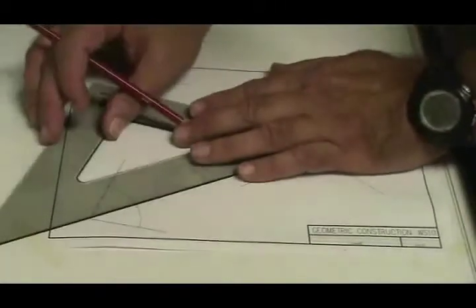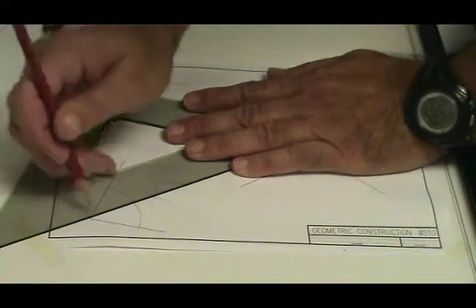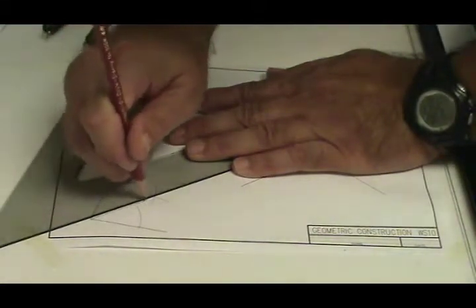And where these two arcs intersect, you should then be able to line up that intersection point with the vertex of your angle and draw a line.